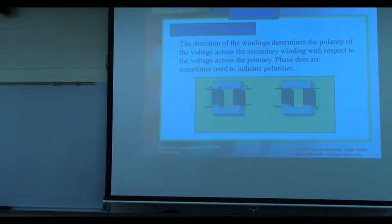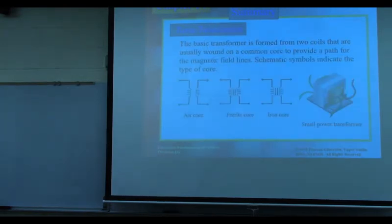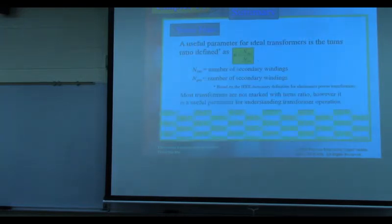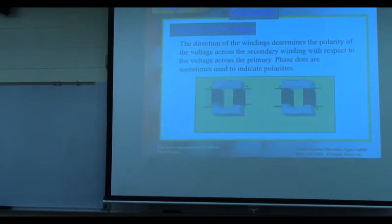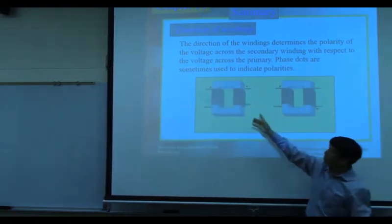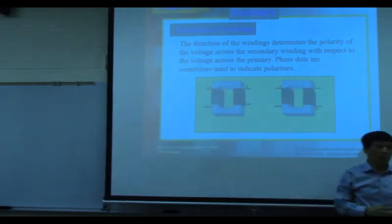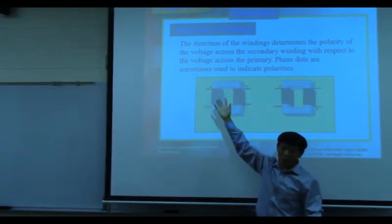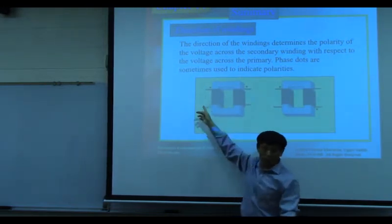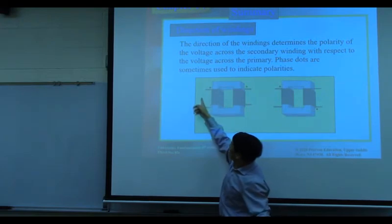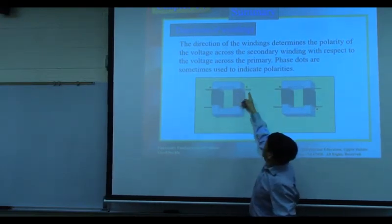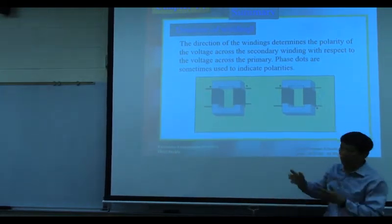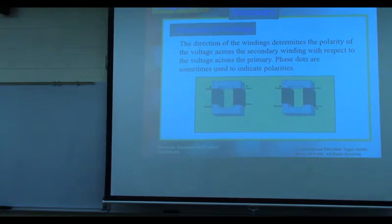On a practical transformer, there will be a dot marking on the terminals indicating polarity. A dot on both terminals means those two terminals have the same polarity — if one is positive, the other is positive. If one is negative, the other is negative. They are in phase: if one goes up, the other goes up at the same time. We call this in-phase.